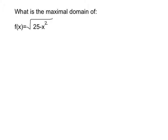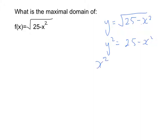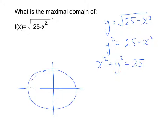Next question: what is the maximal domain of f(x) equals the square root of 25 minus x squared? Writing it as y equals the square root of 25 minus x squared and squaring both sides gives y squared equals 25 minus x squared. Adding x squared to both sides gives x squared plus y squared equals 25 — a circle graph centred at the origin with a radius of 5. Going back to the original, this is the positive square root, so we're only dealing with the top half of the circle.